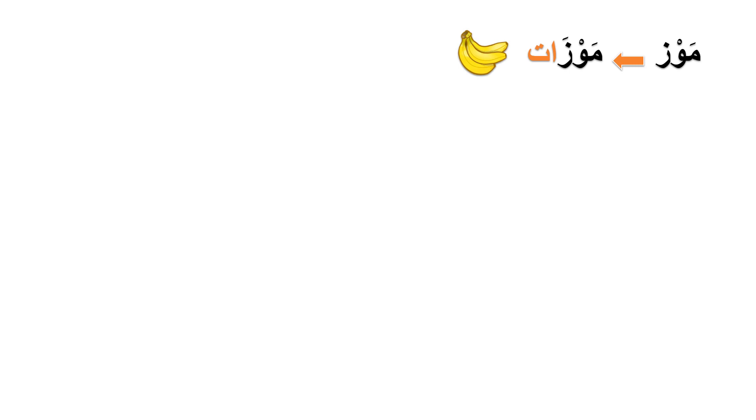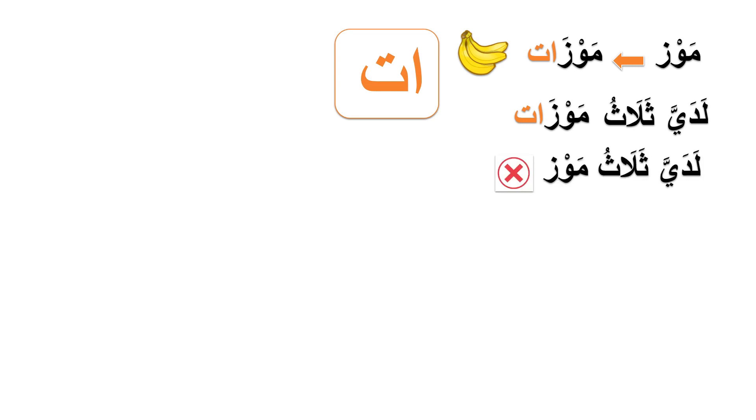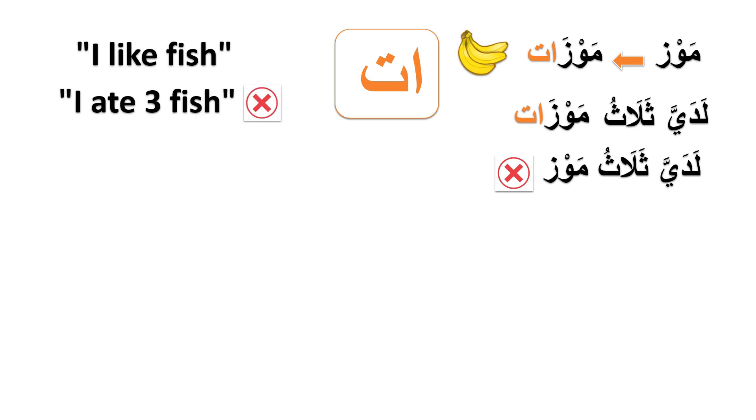Now let's pluralize these nouns. موز becomes موزات — we added ألف and تاء. So if you want to say 'I have three bananas,' you say لدي ثلاث موزات. You can't say لدي ثلاث موز. Similarly in English, you can say 'I like fish,' but you can't say 'I ate three fish' — you should make it plural: 'I ate three fishes.'